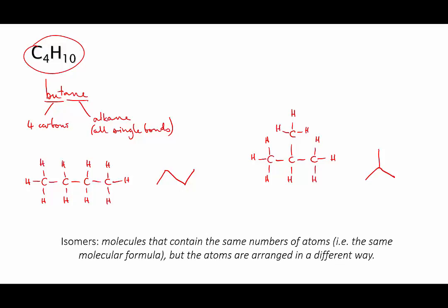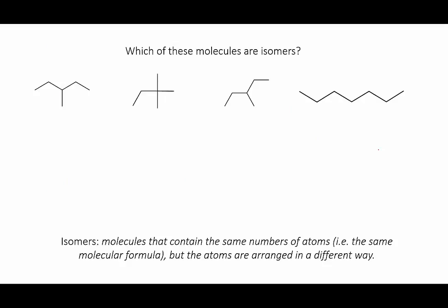So these two molecules are called isomers. They have the same number and type of atoms, but the atoms are bonded to give different structures. Let's now look at this collection of molecules and work out if any of them are isomers. So let's number them first. We'll call this one number one, two, three, four.